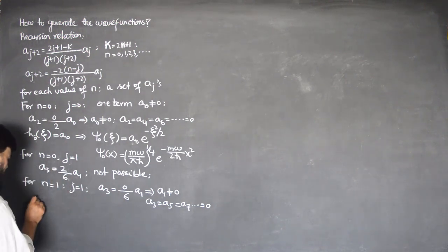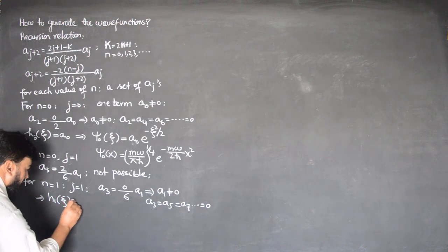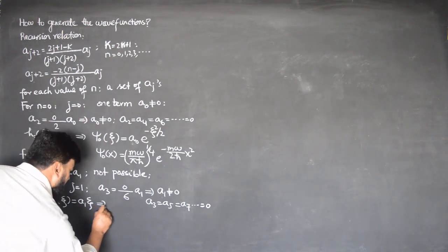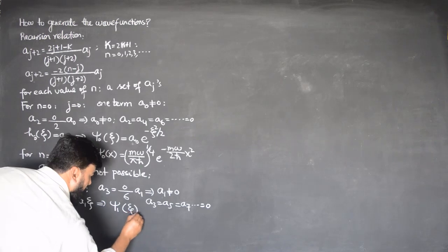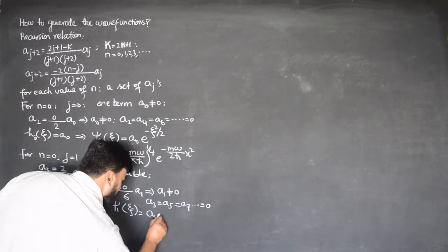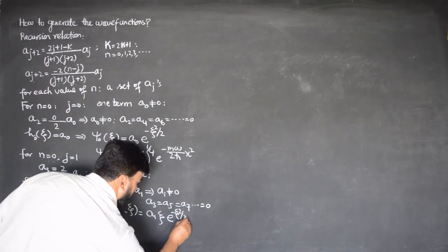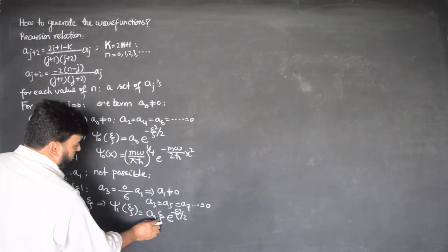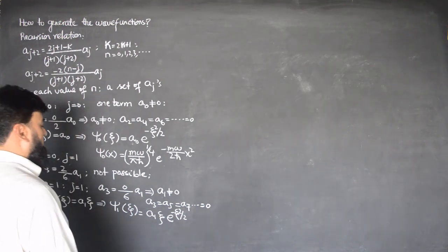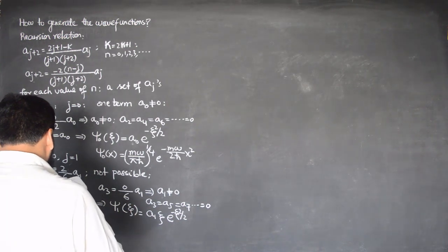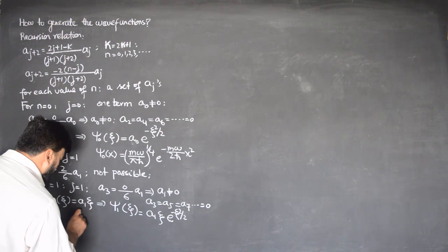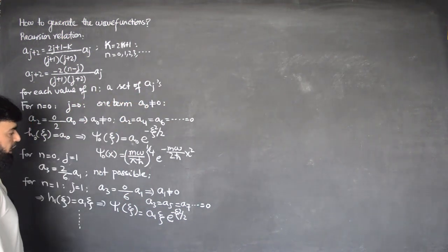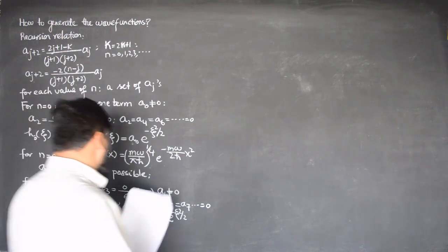This will imply that H_1 and ψ_1 of ξ is equal to A_1 ξ e to the power minus ξ squared over 2. This also resembles our calculation. If we find the normalization constant here, x will come here and then e to the power minus x squared. We can go on calculating this, that for each value of n we can have a set of a_j's. Some are possible, some are not possible.